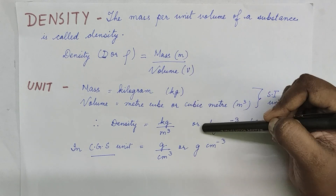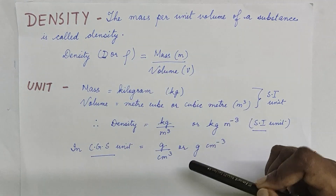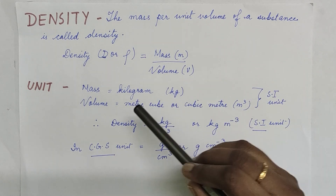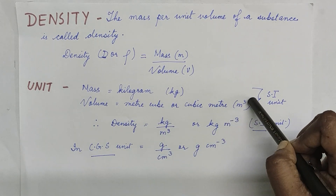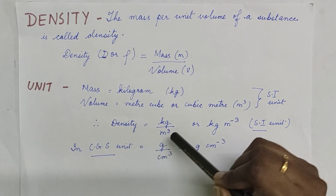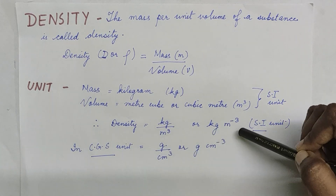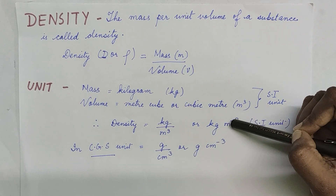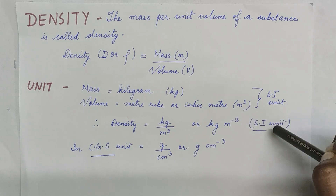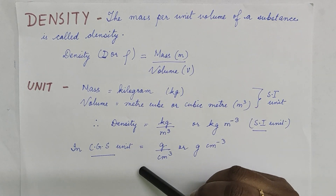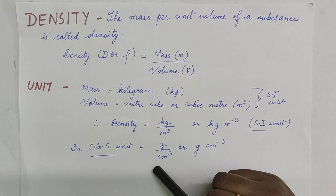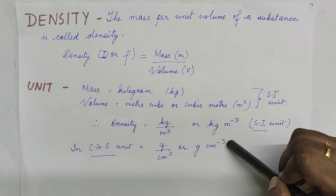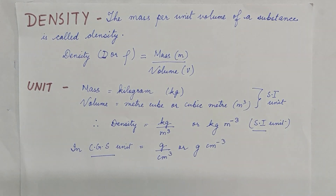Mass and volume have different units, so what will be the unit of density? If mass is taken in kilograms — the SI unit — and volume is taken as cubic meters — the SI unit of volume — then density will be equal to kg per meter cube, or kg m⁻³. That is the SI unit. For the CGS unit, it is gram per cubic centimeter.